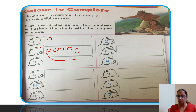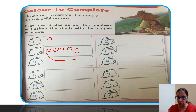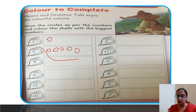Here we have number two, number eleven, number four, number nine, number five, number seven. Whatever numbers are written, we draw their circles first. Then we color only the shell which has the biggest number. Two, eleven, four, nine, five, seven — the biggest is eleven. So in this row, we color the shell with number eleven.